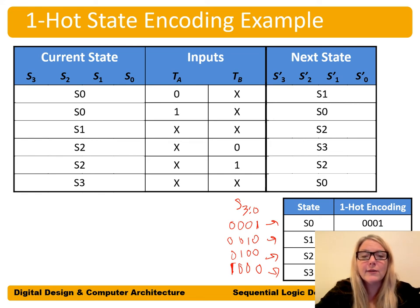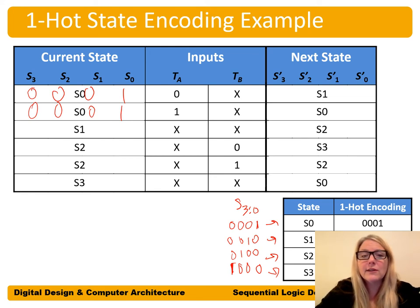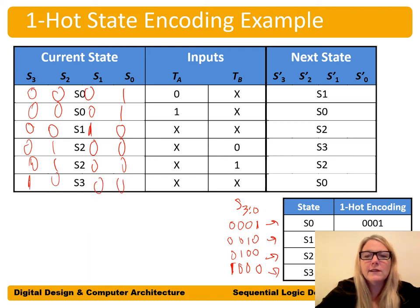For one-hot encoding of our traffic light controller, the unencoded state transition table is identical — only the encodings change. S0 becomes 0001, S1 becomes 0010, S2 becomes 0100, and S3 becomes 1000. We replace all state names with these one-hot encodings to create the encoded next state table.